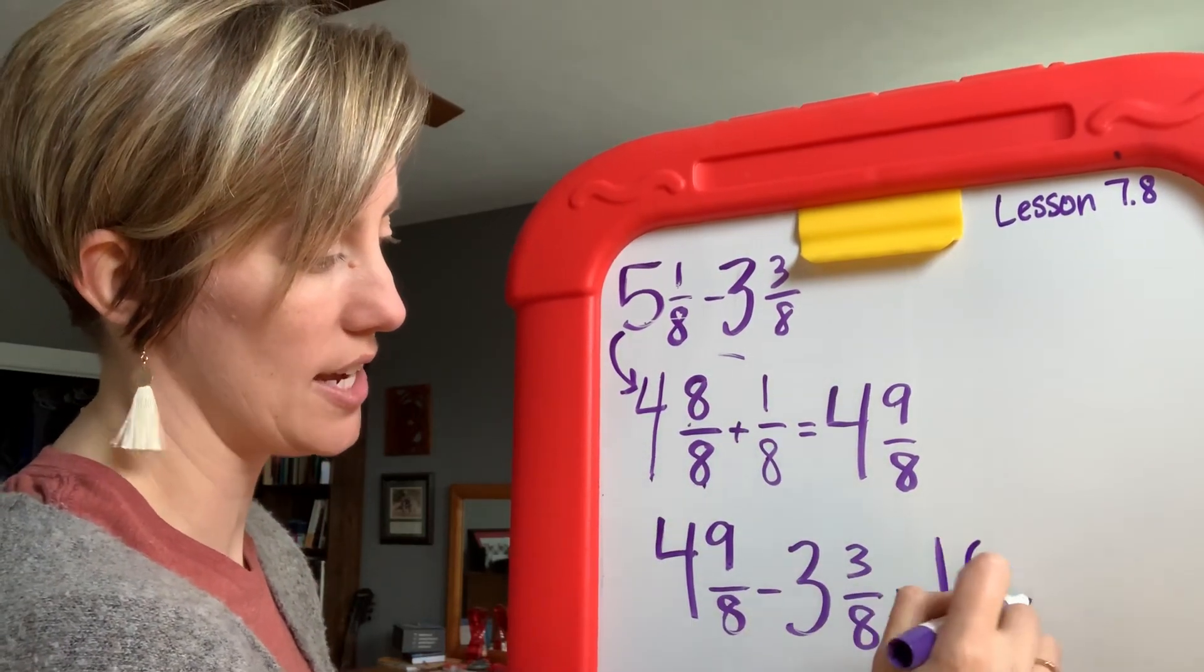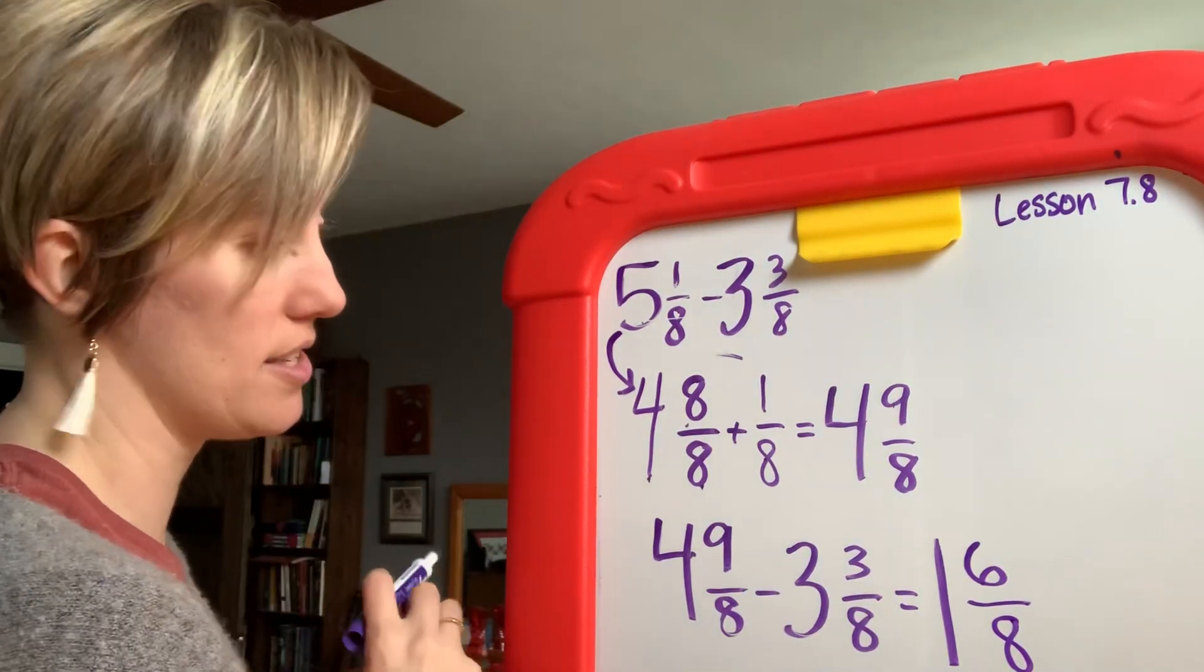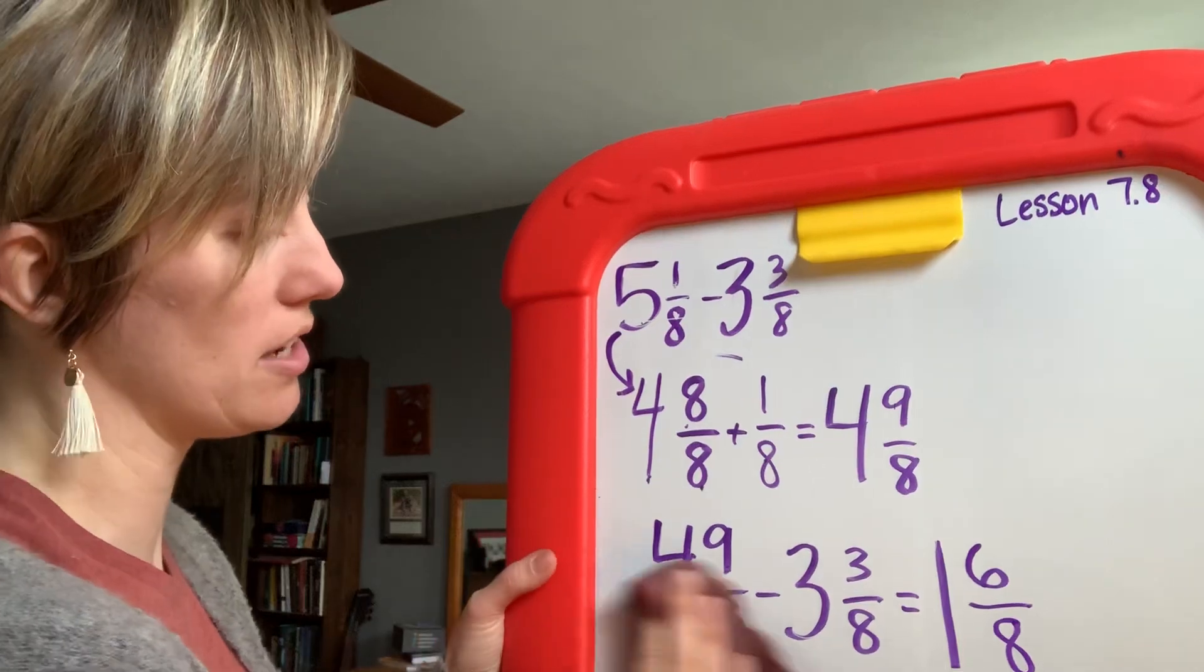Then I put these two fractions together: 9/8, 4 and 9/8. So four minus three is one and nine minus three is six. That gives me 1 and 6/8. Okay, that is the second strategy: renaming just the first fraction.